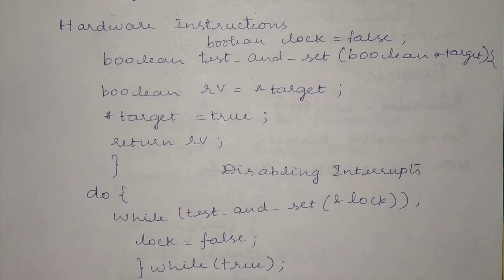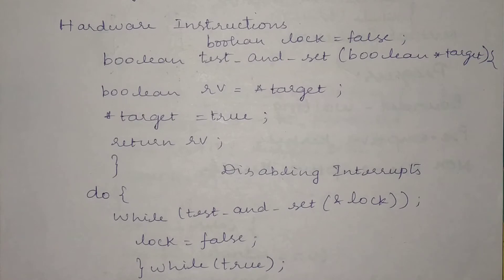One more approach is to use non-preemptive kernels. Non-preemptive kernels means once a process has been allotted to the CPU, it will not be preempted at all until the completion of its execution. Only then will the CPU be given to the next process. By using this kind of approach also, we can avoid the critical section problem.